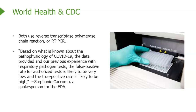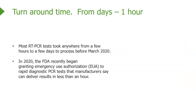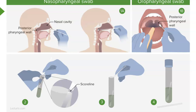When she mentioned 'authorized tests,' that's significant — unapproved home kits that were available for just under $200 were removed from the market. Turnaround time for these tests can range from days to about an hour. Before March 2020, most tests took days. The FDA stepped in and granted Emergency Use Authorization, or EUA, enabling rapid diagnostic PCR tests that manufacturers say can deliver results in less than an hour.